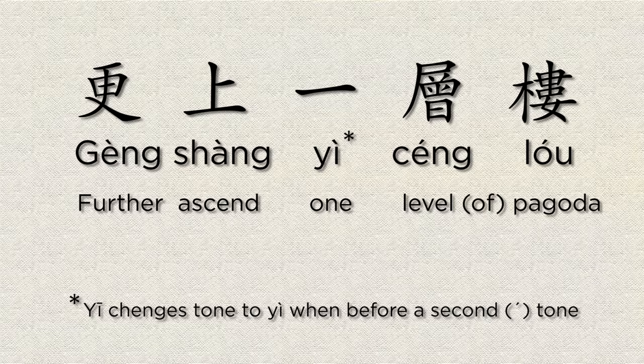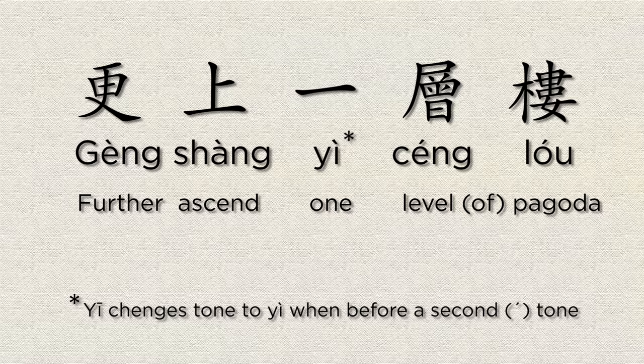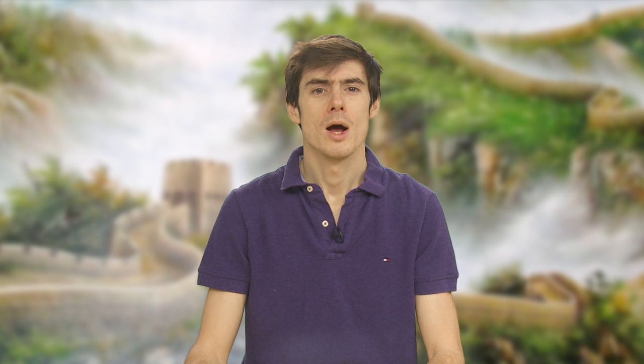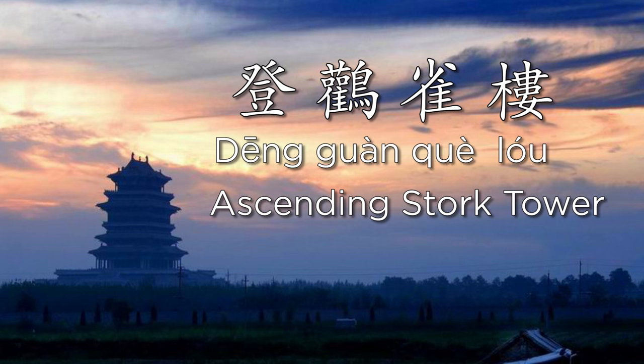更上一層樓. 更 means further, pretty much the same meaning as in modern Chinese. 上 means to ascend, to go up. 一 is one. 層 means level or story. 樓 is pagoda. So: I ascend one more level of the pagoda. And that pagoda is Stork Tower that is in the title, Ascending Stork Tower.